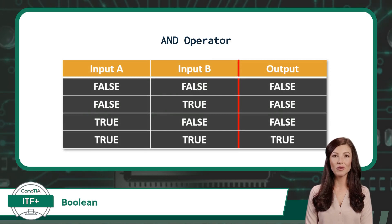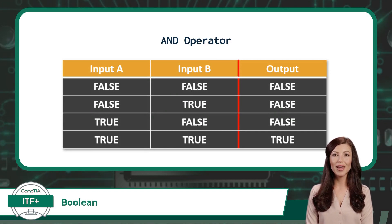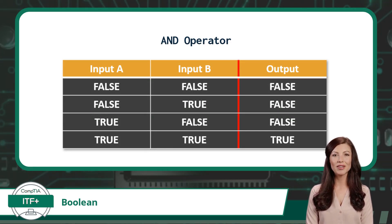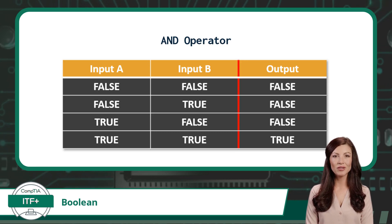First up we have the logical AND operator. The AND operator returns true if both inputs are true, and returns false otherwise. Let's try an example and compare the inputs to the AND operator table to find the appropriate output. The first conditional statement will be: my shirt is pink. Well, that is a true statement, so we will use true for input A.